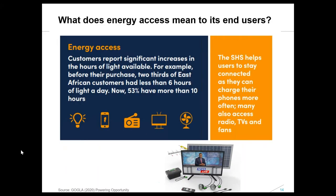The next few slides show extracts from Gogla's Powering Opportunity Report, which provides a great overview of impacts — I'd really recommend looking at it. When we think about energy access, what does that mean to its end users — to the households getting access to better or even first access to energy and appliances? One of the first big pushes in the off-grid sector was providing lighting, and there's a lot of research on that. Over time it's moved towards larger solar home systems bundled with small household appliances like radios, TVs, fans, and mobile phone charging.